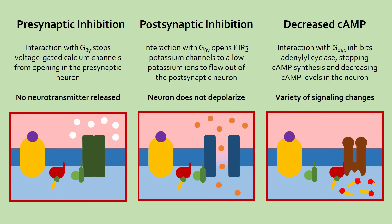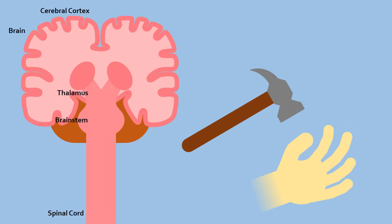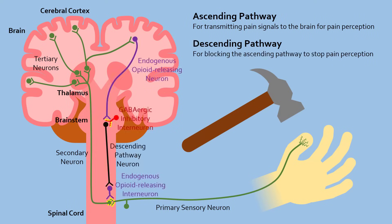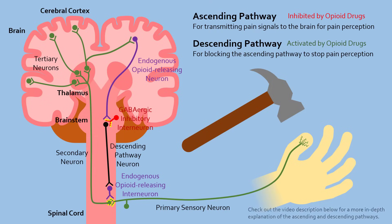So now we know how opioids can stop signal transmission between neurons. How does that result in less pain? Our body has two pain pathways: the ascending and the descending pathways. The ascending pain pathway is used to transmit pain signals to the brain, letting us know that we are hurt. The descending pain pathway's job is to shut down the ascending pathway, allowing us to no longer feel pain. So the two main effects of opioids are to shut down the ascending pathway and activate the descending pathway, providing pain relief. Keep in mind that this diagram and the following explanation are very simplified.